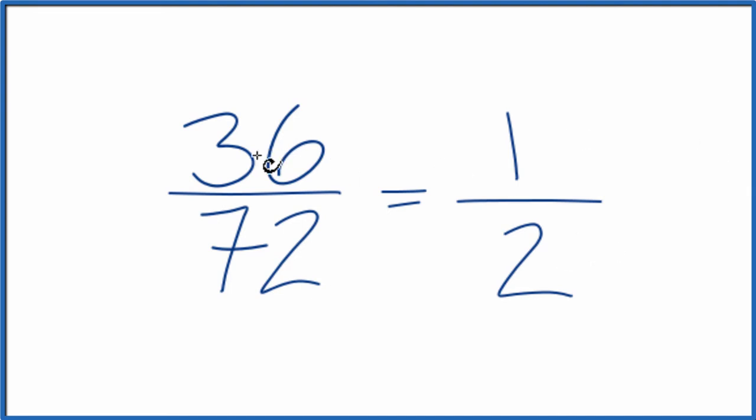And if you divide 36 by 72 and 1 by 2, you're going to get the same answer. You're going to get 0.5. These are equivalent fractions. It's just that we've reduced or simplified 36 over 72 down to 1 over 2.